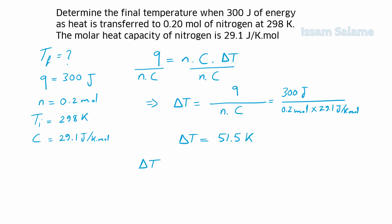You know that Delta T is equal to T final minus T initial, then T final is going to be equal to T initial plus Delta T. T initial is 298 Kelvin and Delta T is 51.5 Kelvin, so the answer is going to be 349.5 Kelvin.